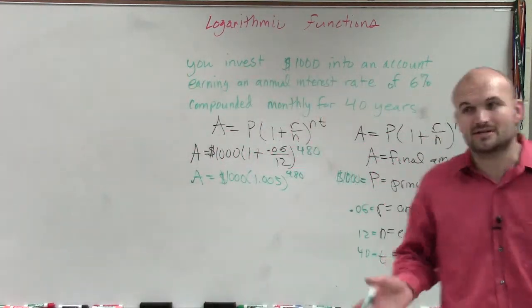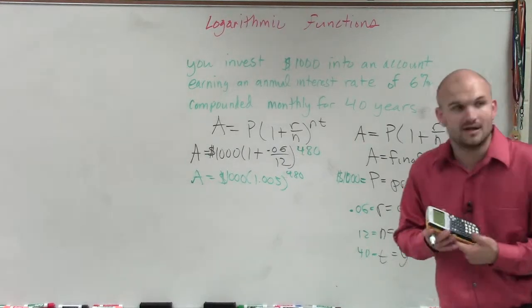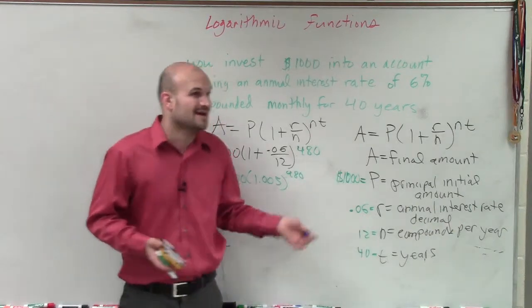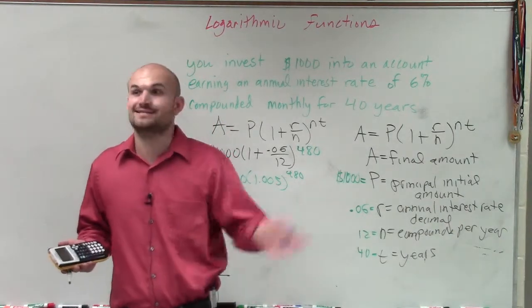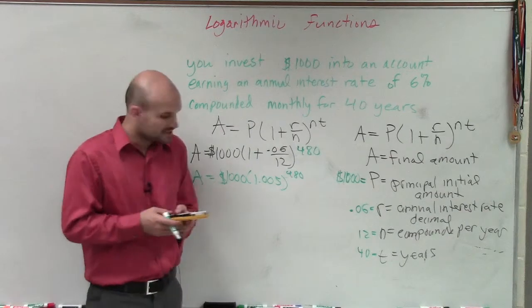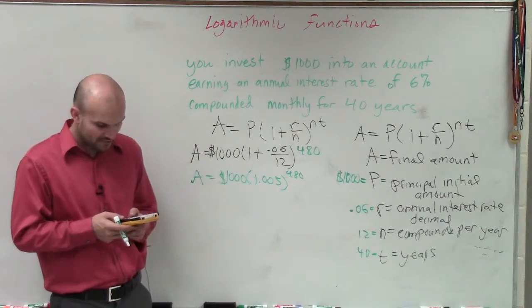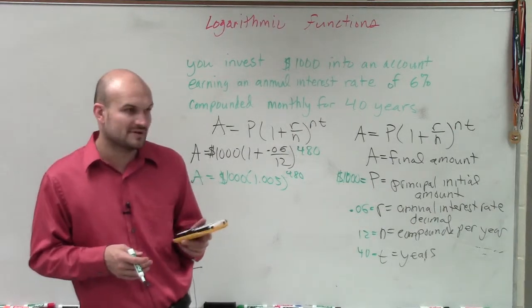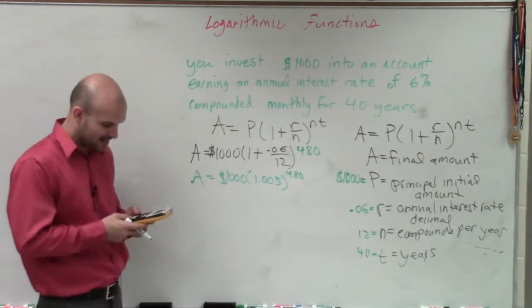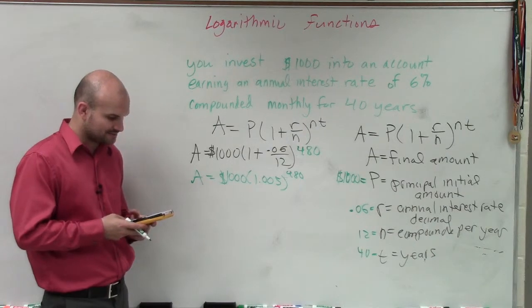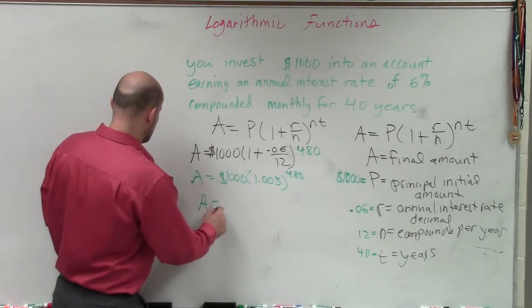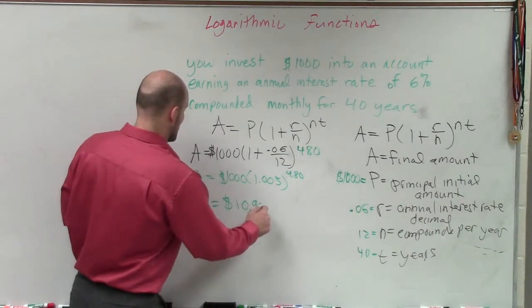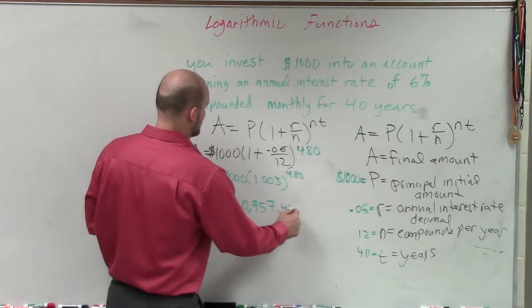All right? So I like to get to this point because, ladies and gentlemen, when you're using your calculator, you need to be very careful when approximating compound interest. If you're off a couple pennies, the whole problem can change very quickly. So now I take 1.005, raise it to 480, and I get 10.95745367, which keeps going on. And I multiply that by 1,000. So therefore, my final amount is A equals $10,957.45.